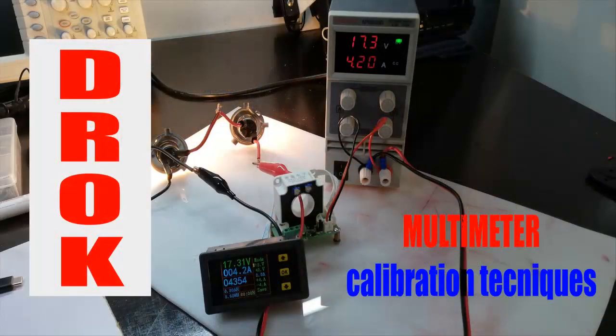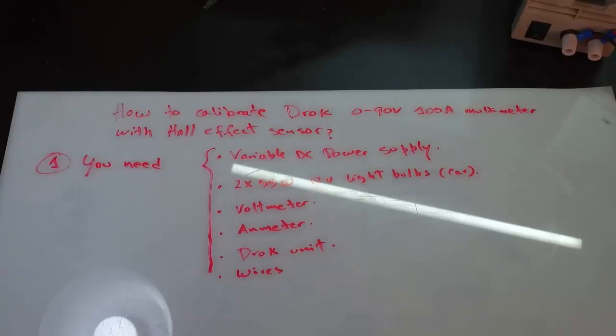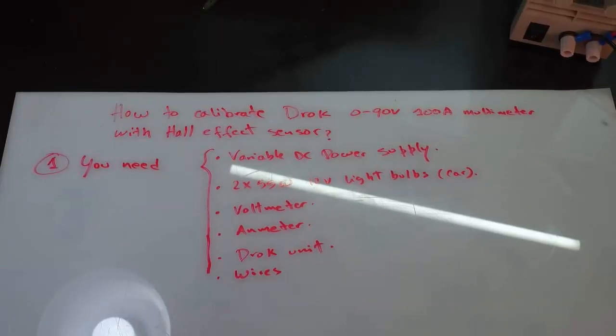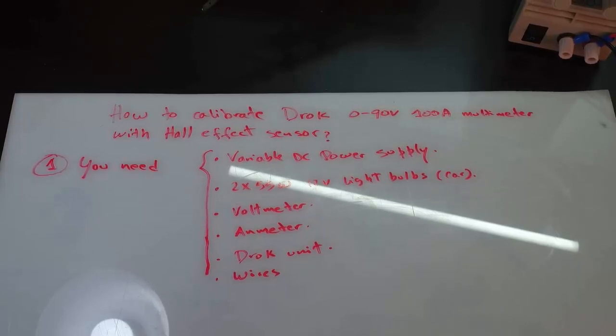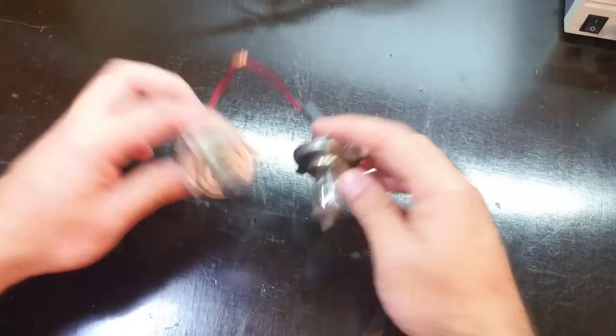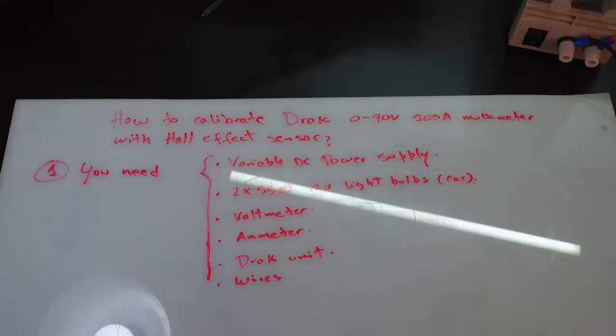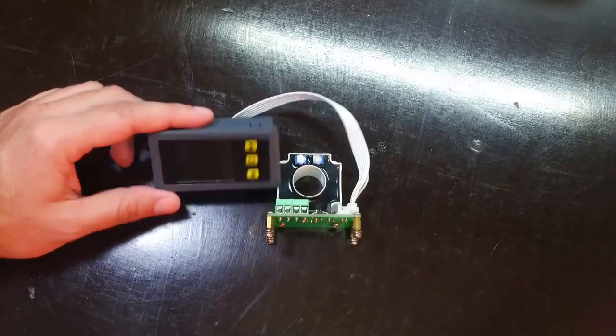Hello guys, today we're going to talk about the calibration process of the DRAC multimeter. How to calibrate a DRAC multimeter with Hall FX sensor: you will need a variable DC power supply, 250-watt rated 12-volt light bulbs, a voltmeter and ammeter, a DRAC unit, and wires to make the connections.